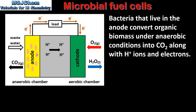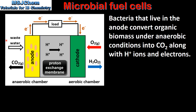Here we can see the bacteria that live in the anode. These bacteria oxidize fuel into carbon dioxide, electrons that flow in an external circuit and hydrogen ions that pass through a proton exchange membrane. At the cathode oxygen is reduced to form water.